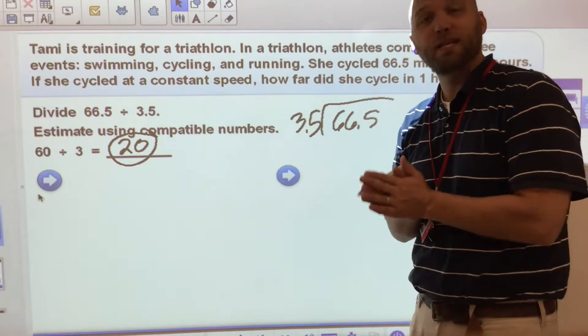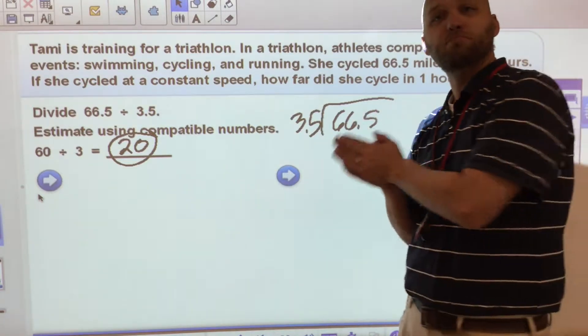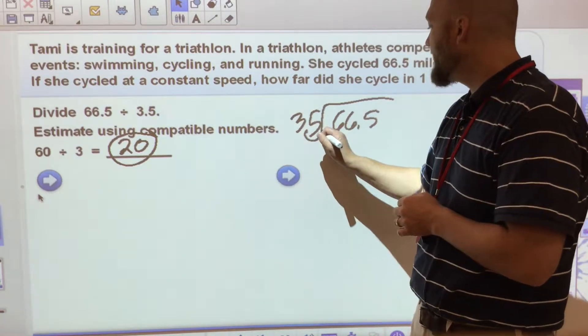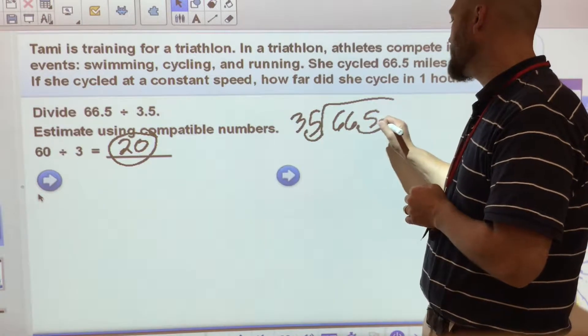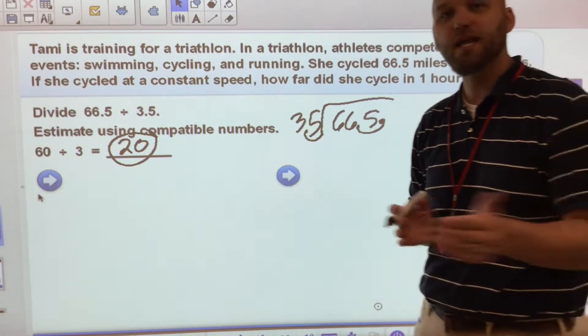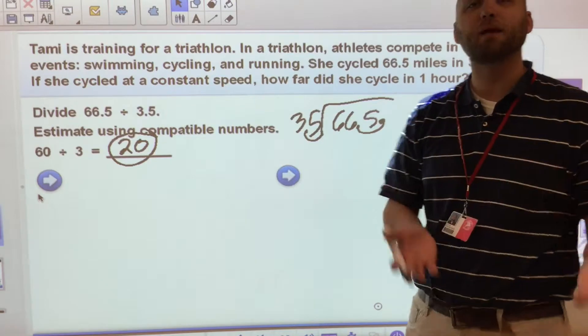3.5 into 66.5. First thing that I can do is I can move my decimal. But I have to move it in both. So I move my decimal over in one, I move my decimal over in the other. What this problem becomes, then, is 665 divided by 35.